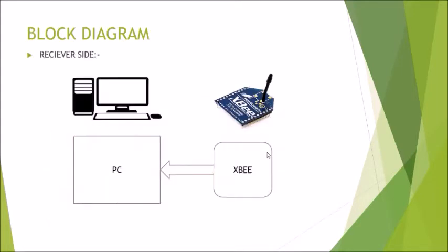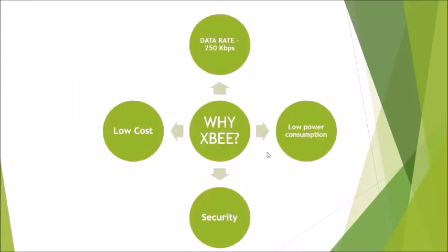On the receiver side, we are using a PC connected inside the kitchen, and a ZigBee unit connected to it which will receive the data ordered by the customer. As for why ZigBee: ZigBee has advantages over RF transmitter-receiver systems. The first advantage is security, the second is data rate, and the third is range.